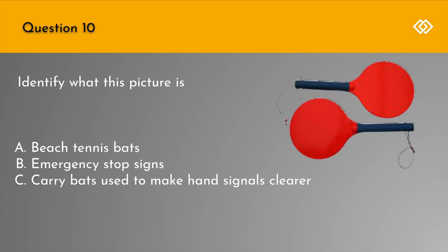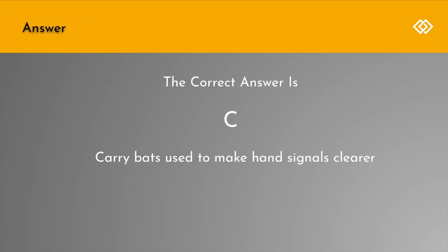Question 10. Identify what this picture is. Is it: A. Beach tennis bats. B. Emergency stop signs. Or C. Carry bats used to make hand signals clearer. The correct answer is C: Carry bats used to make hand signals clearer.